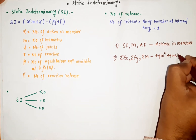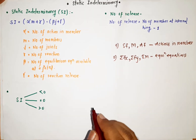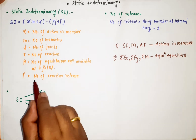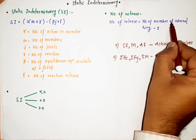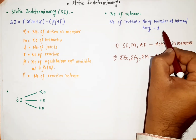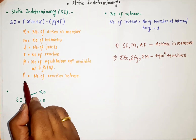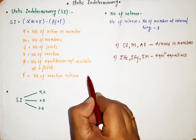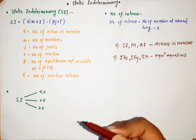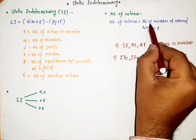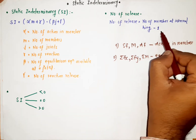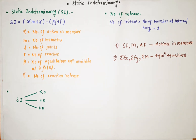γ is equal to the number of releases. The number of releases can be calculated as the number of members at an internal hinge minus one. Always remember that γ applies only at hinges — whenever there is a hinge in a structure, we use: number of releases = number of members at internal hinge minus one.